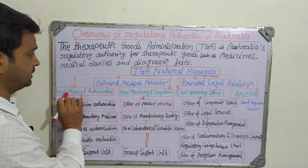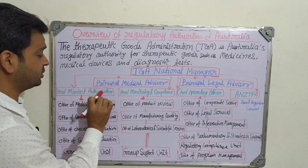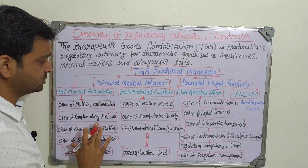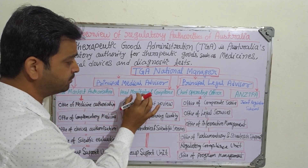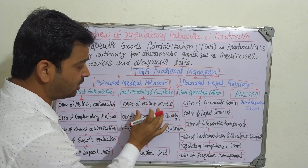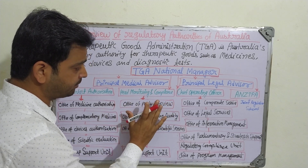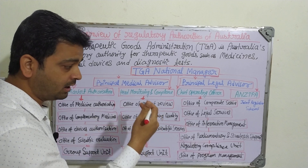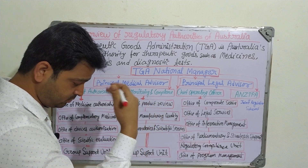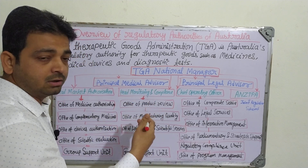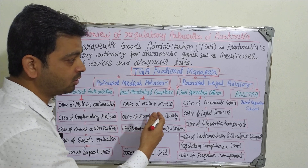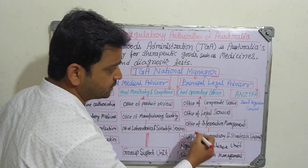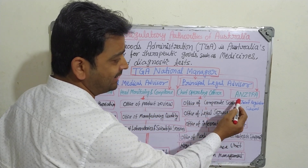Under the National Manager there are also the Head Market Authorization Group, the Head Monitoring and Compliance Group — responsible for reviewing whether work is being carried out correctly — and a Chief Operating Officer.